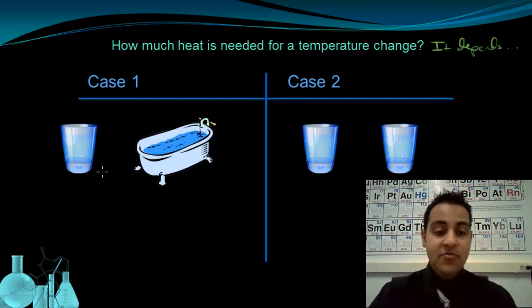In case one, I have a glass of water and a bathtub of water. Both of these samples will boil at 100 degrees Celsius, because all pure water samples boil at 100 degrees Celsius. The question is, which of these will I have to add more heat to to bring it to boiling?